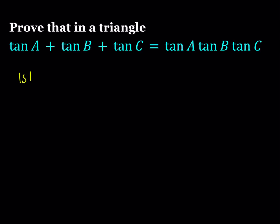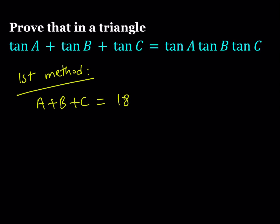So, the first method. I'm going to be using the degree symbol instead of radians, but I'll only write it once. A plus B plus C is equal to 180 degrees. From now on I won't write the degree symbol, but that's what I mean. So if you isolate A plus B, you can write it as 180 minus C.